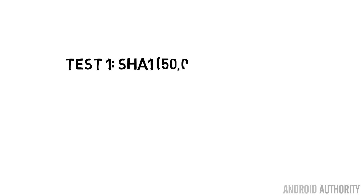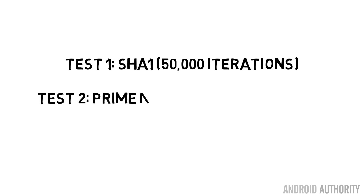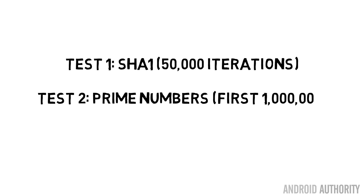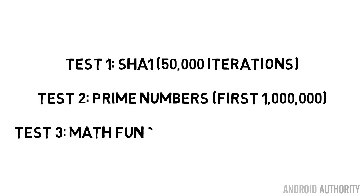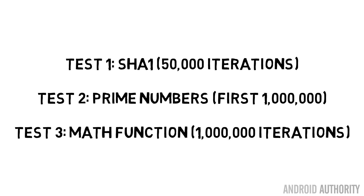The app does three things. First, it calculates the SHA1 hash of a block of data. Then it calculates the first million prime numbers using trial by division. And finally, it runs a mathematical function that I wrote, a million times, to see how long it takes.